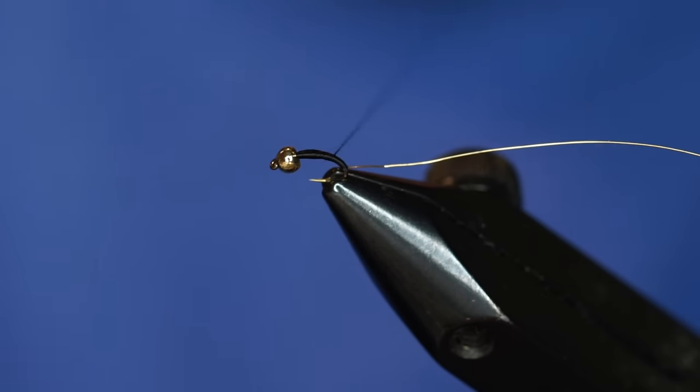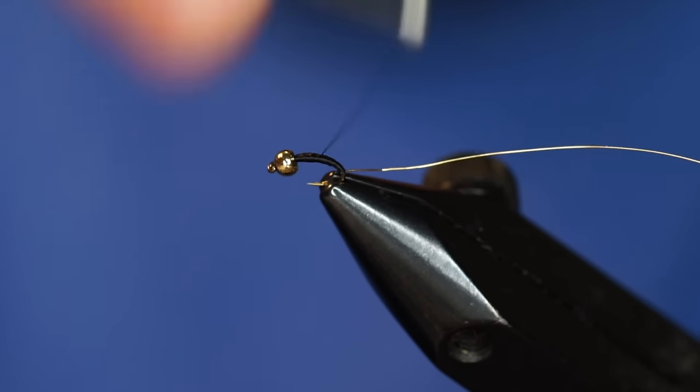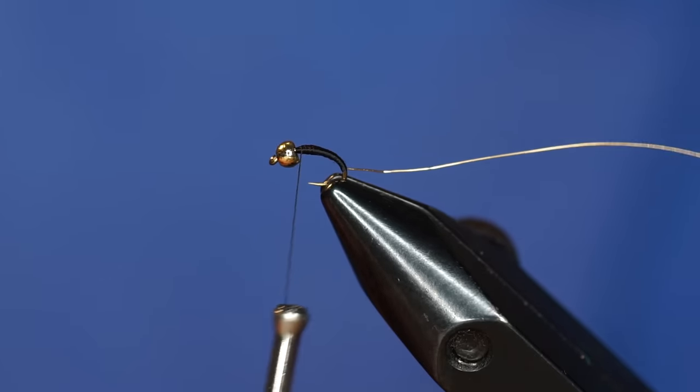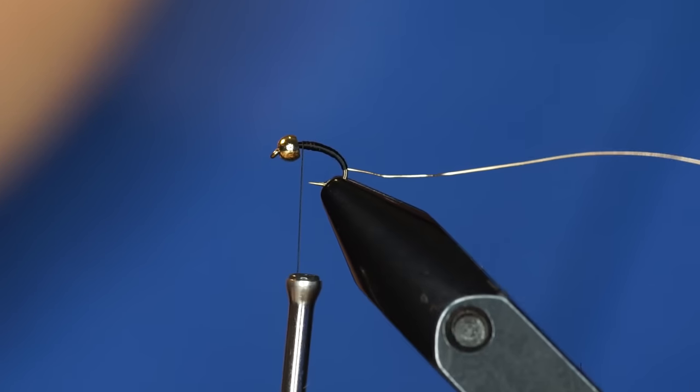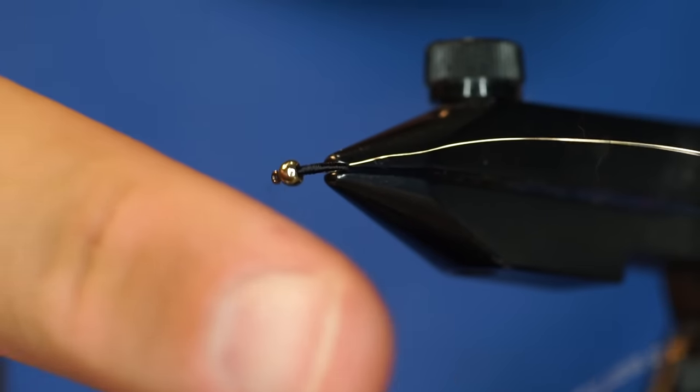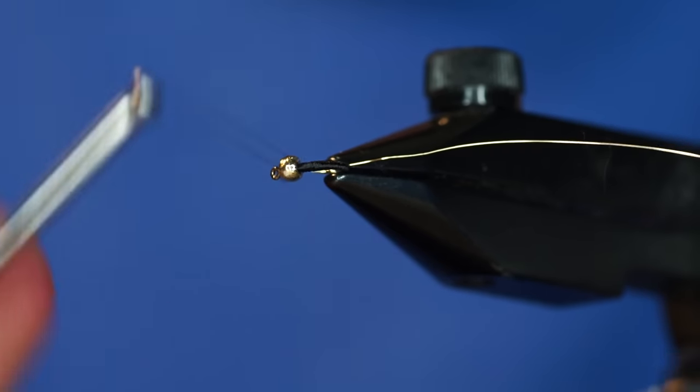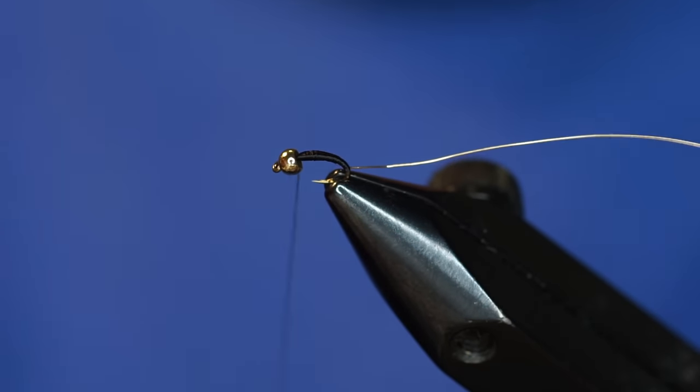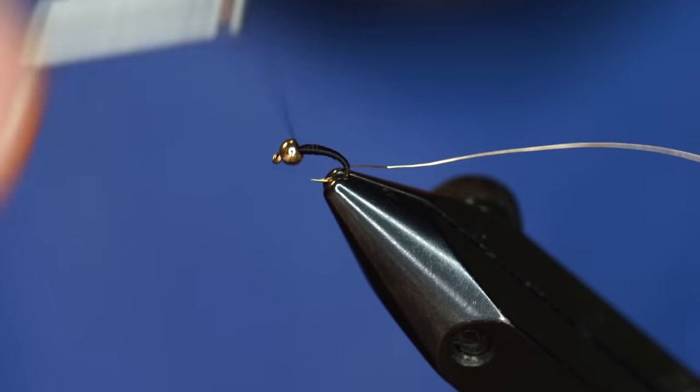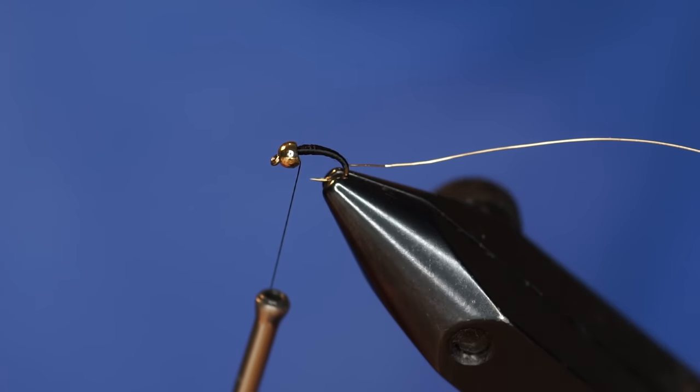If you're a left-handed tier, you're lucky because you're automatically taking the twist out of your thread just by tying the fly. So there we have a decent taper. It doesn't have to be perfect.